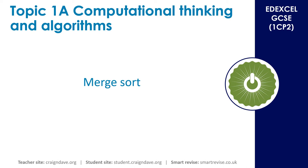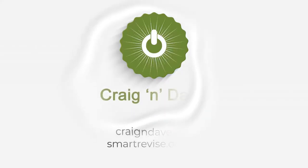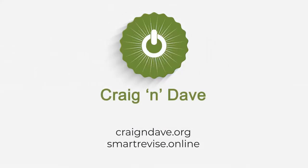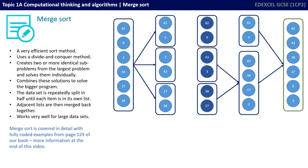In this video, we're going to have a look at a merge sort. If you've watched our previous video on bubble sorts, you'll know that the bubble sort was quite inefficient. The merge sort, although it's much harder to program, is definitely more efficient because it can work on multiple lists at the same time. It uses a divide and conquer method, and it creates two or more identical subprograms from the largest problem, solving them individually. It combines their solutions to solve the bigger problem.